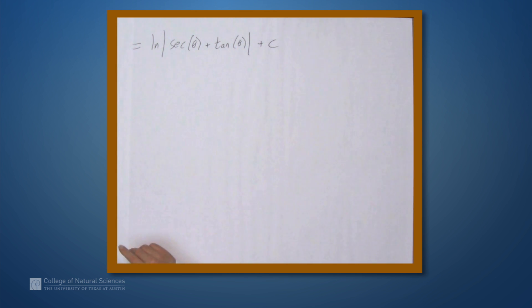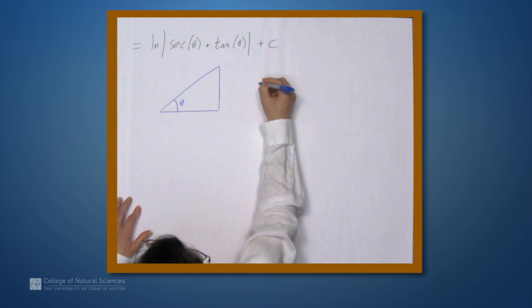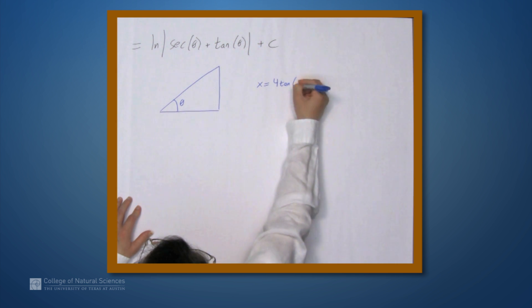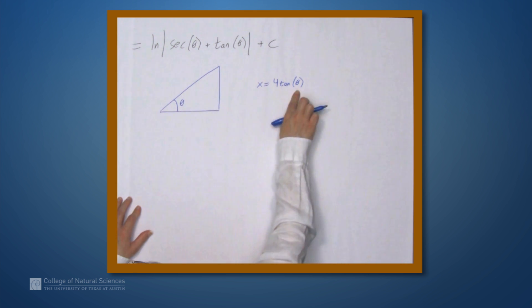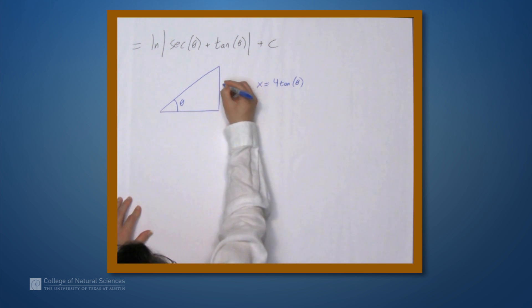So to do that, we'll make use of this handy triangle. So let's call this angle theta. And just as a reminder, we started by setting x equal to 4 tangent theta. So what does that say about tangent theta? Well tangent theta is x divided by 4. Tangent is opposite over adjacent, so we can write x and 4.